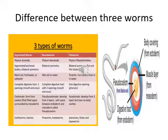Segmented worms live in moist soil, fresh water, or salt water. Roundworms live in wet soil or water. Flatworms can be parasitic and live inside a host or in water. Segmented worms have a complete digestive tract with a mouth to intake food and an anus to excrete. Roundworms also have a complete digestive tract with mouth and anus. Flatworms have only one opening that acts as both mouth and anus.